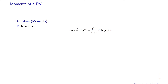The nth order moment is defined as the expected value of x to the power of n, which equals the integral of x to the power of n times its distribution over all possible values of x. For a discrete random variable, you write a summation over all i from 1 to infinity of x_i to the power of n times P(x = x_i), summing over all values x can take on to get the moment.